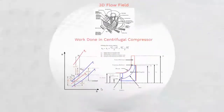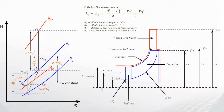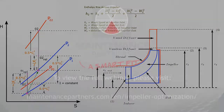Moving further to the work done within a centrifugal compressor — the image on the right side is a cross-sectional view of a centrifugal compressor. Point one is the inlet of the impeller, point two is the exit of the impeller, location three is the exit of the vaneless space in the diffuser, and point four is the exit of the vaned diffuser.